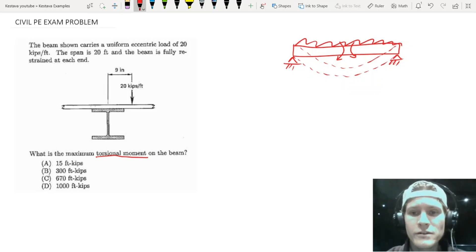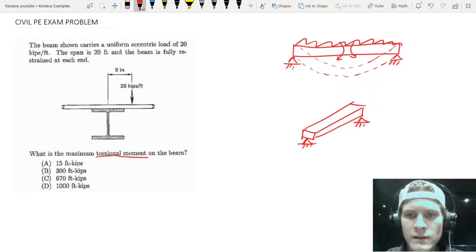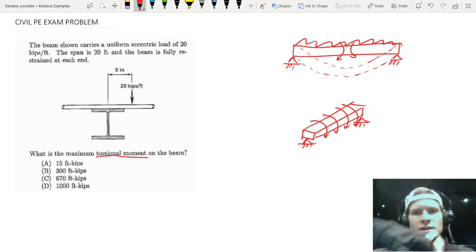But for torsion, let's see, I'm going to try to go isometric here for you. On the fly, we have a torsional moment that's doing something like this along the length of the entire beam. So it's starting to turn and twist that beam is really what torsion is, is twisting of an element.